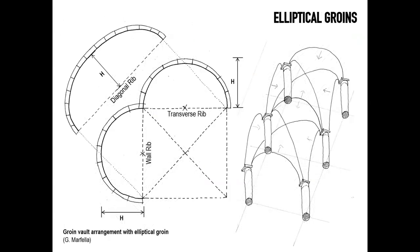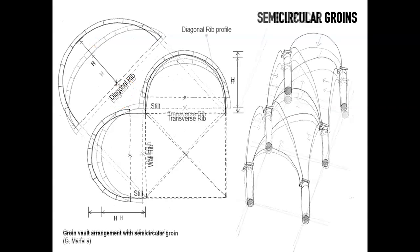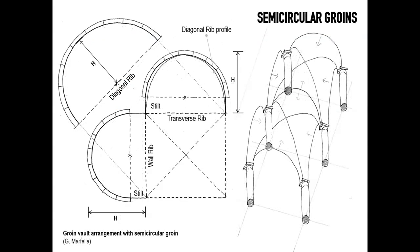There is a fundamental problem with the groin vault system: the rib generated by the intersection of two semi-cylindrical shapes is a diagonal rib that is elliptical. An ellipse is not easy to control. The next step of evolution was to not use necessarily elliptical diagonals, but rather to build the diagonal ribs — also known as the ribs of the groins — with semicircular arches instead.